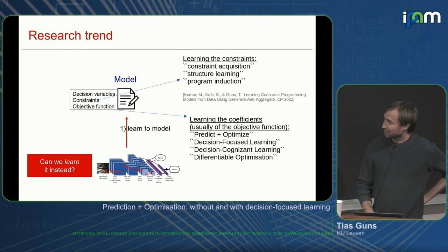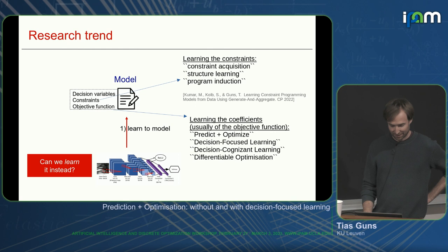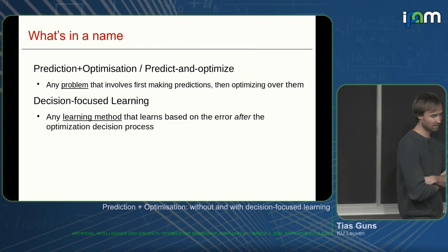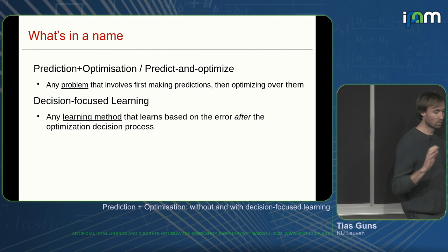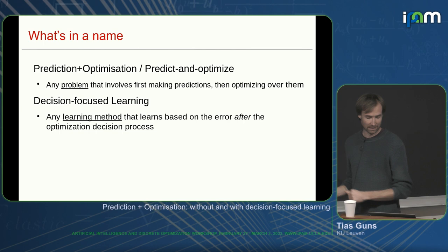There are a number of terminologies — two of which I used in my title: Predict and Optimize, and Decision-Focused Learning. We've also heard Decision-Cognizant Learning and Differential Optimization. When we talk about prediction plus optimization or predict and optimize, it typically describes the problem setting — any kind of problem where you first make some prediction and then optimize over it. It doesn't say anything about the method, just about the type of problem.